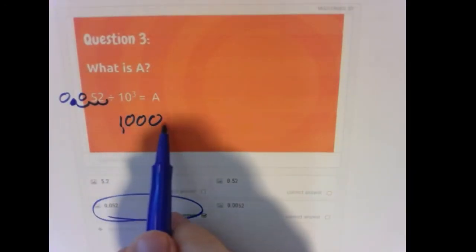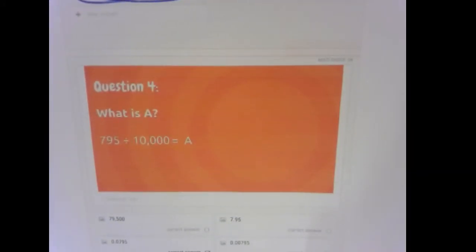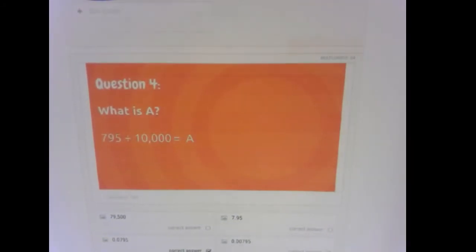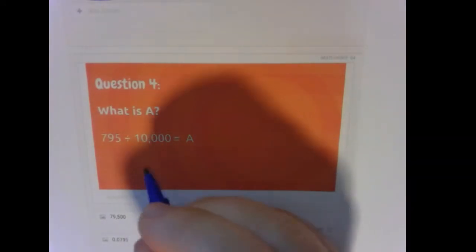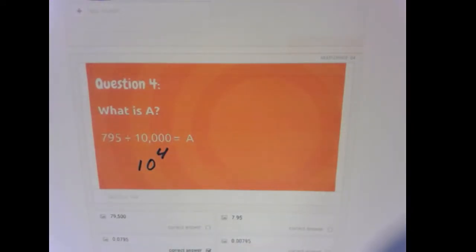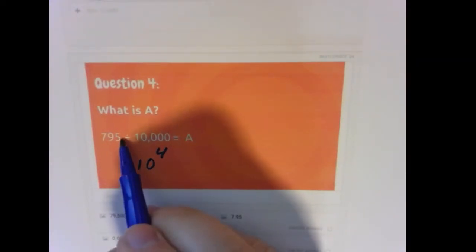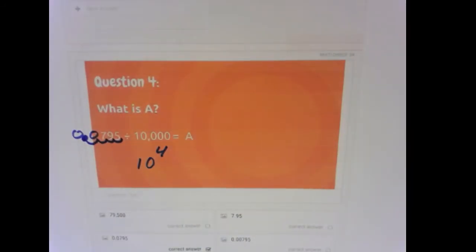So how many zeros, three zeros, three. So 10,000, that would be like 10 to the fourth power. So if we're doing 795 divided by 10,000, then we want to move this decimal over one, two, three, four spots. So we're looking for 0.0795.